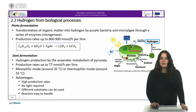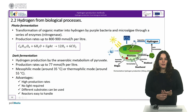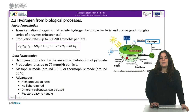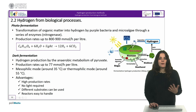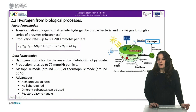To conclude this unit, we will explain what dark fermentation is. Anaerobic bacteria can produce hydrogen by growing in the dark on a substrate rich in carbohydrates. Here, hydrogen production is carried out by the anaerobic metabolism of pyruvate. Production rates in this case go up to 77 millimoles per hour per liter. There are two working modes: the mesophilic mode at around 35 degrees Celsius, or the thermophilic mode at around 55 degrees Celsius. Advantages of this method include high production rates in terms of reactor volume, no light is required, different substrates can be used, and the reactors are very easy to handle.